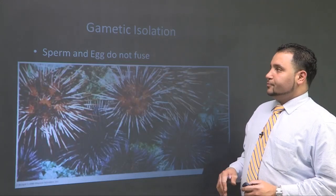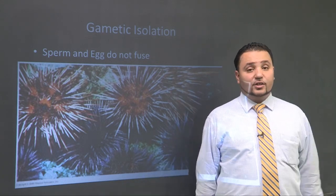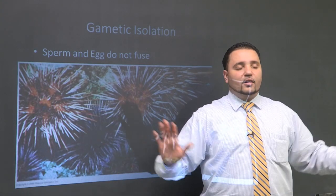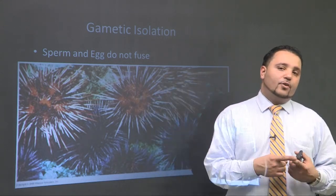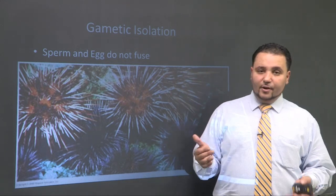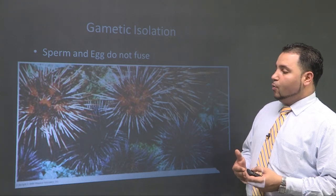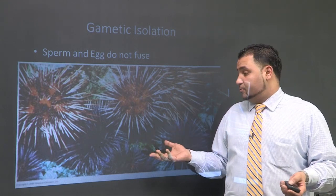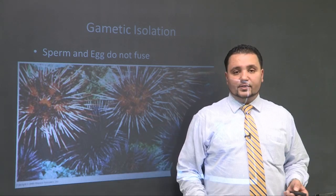Let's say you lived underwater and had gametic isolation. Underwater, everybody does external fertilization unless you're a mammal — fish, sea urchins, and amphibians are all shooting out clouds of sperm and releasing eggs. What's to stop frog sperm from trying to fertilize fish eggs? It's simple: the two gametes will not fuse together. This is called gametic isolation. In this picture, two different species of sea urchin are actually next to each other, but their sperm and eggs don't fuse together — therefore, you don't get a new species. No speciation.